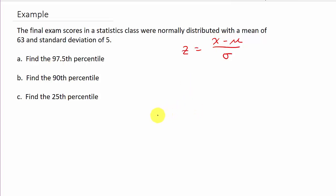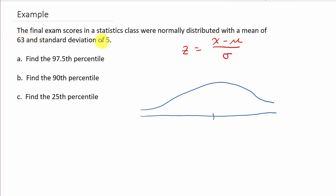For the first example we have a normal distribution and we need to find x. We're given the mean which is 63, and sigma, the standard deviation, which is 5. We have to figure out what z is, and once we do, we can solve the equation for x. On the standard normal curve the mean is 0, and we need to find the 97.5th percentile.